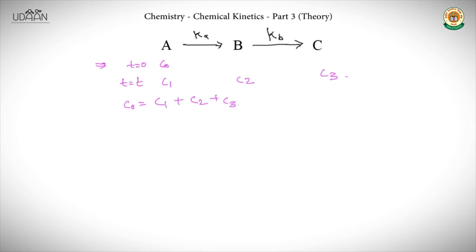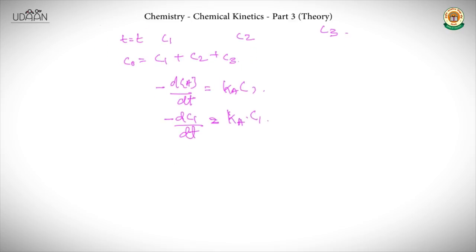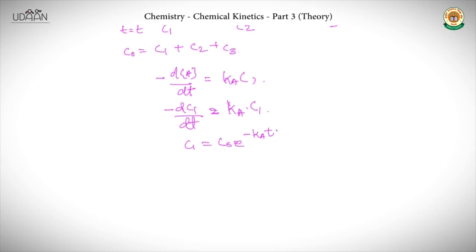The rate of disappearance of A is: minus dA/dt equals Ka times C1. Therefore, minus dC1/dt equals Ka times C1. This looks like a first order differential equation. Therefore C1 equals C0 e raised to the power minus KaT — same as a first order reaction.